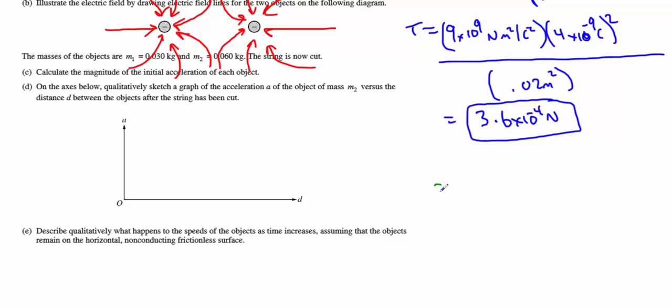So that means the overall acceleration of, say, the first particle will be the tension we calculated above. We can just indicate that as F net. We're going to divide that by the mass of the first particle. So 3.6 times 10 to the negative 4 Newtons divided by 0.03 kilograms. We're going to get 1.2 times 10 to the negative 2 meters per second squared. That is the acceleration of the first particle.